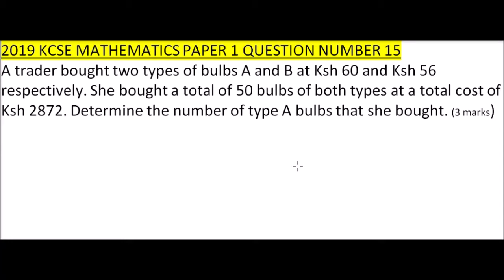You get three marks. Here you are supposed to form linear equations using the information given. For example, if the total number of bulbs were 50, then it means that a plus b should equal 50. That is one equation.